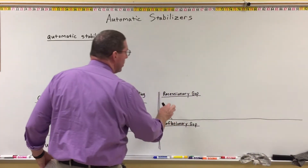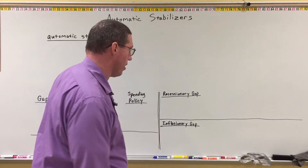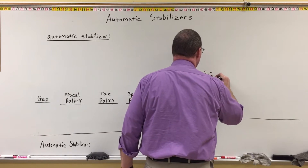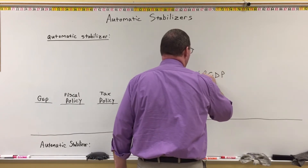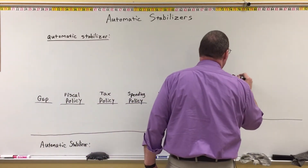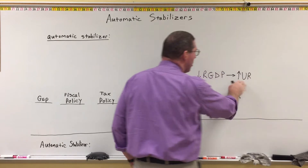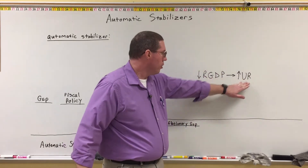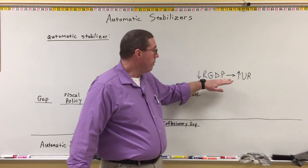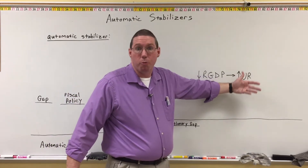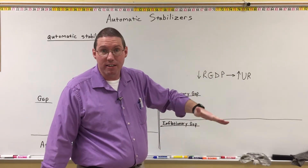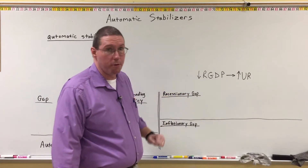When the economy goes into a recessionary gap, that means real GDP is down. By Okun's law, that means the unemployment rate is going to be higher. So in a recessionary gap, real GDP is low, unemployment goes up. We produce less, people get fired because we're not producing as much stuff — we have cyclical unemployment.